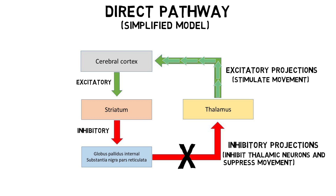The substantia nigra pars compacta is thought to modulate the activity of the direct pathway. Neurons from the substantia nigra pars compacta travel to the striatum via the nigrostriatal pathway and release dopamine in the striatum, and one effect of this seems to be the facilitation of activity in the direct pathway.